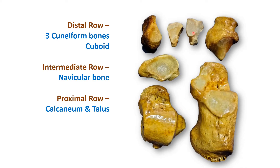The largest of all tarsal bones is the calcaneum. The smallest of all tarsal bones is the intermediate cuneiform bone. Talus lies above the calcaneum, forming the junction between the leg and foot bones. Let's see the bony features, articulations, and side determination of tarsal bones.